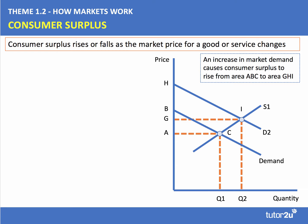Let's take another scenario. In this case the demand curve for the product has shifted out to the right from D to D2, with conditions of supply remaining the same. The quantity increases from Q1 to Q2 and the price goes up from A to G. The initial level of consumer surplus was ABC; the new area of consumer surplus is GHI. So an increase in consumer surplus reflects people's greater willingness and ability to pay.